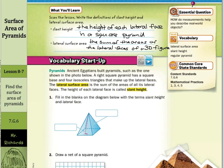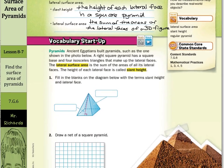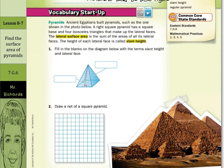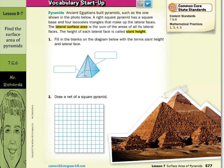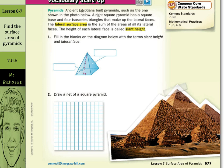For our vocabulary startup, ancient Egyptians built pyramids such as the one shown in the photo below. A right square pyramid has a square base and four isosceles triangles that make up the lateral faces. The lateral surface area is the sum of the areas of all its lateral faces. The height of each lateral face is called slant height.